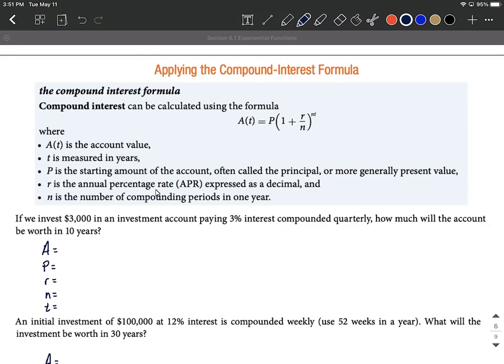r is the annual percentage rate, an APR. Normally this comes as a percentage, but we want to move two decimal places to the left and make this into a decimal.